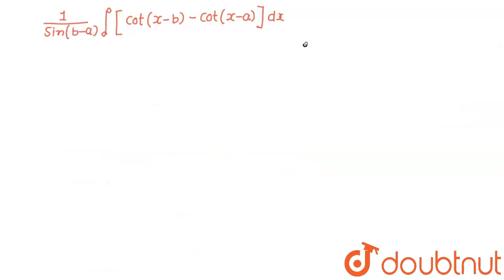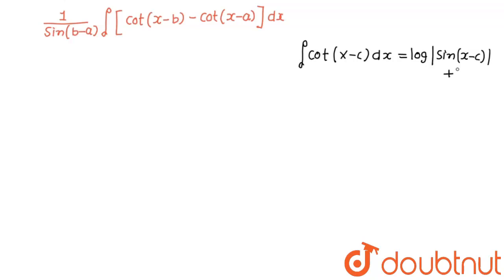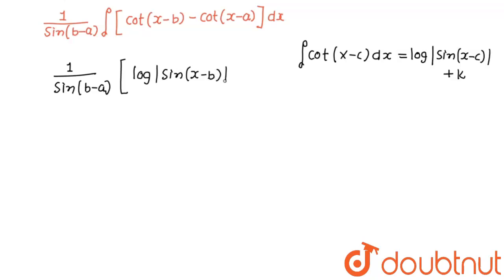Now I am going to integrate this. We all know that the integration of cot(x minus c) dx equals log|sin(x minus c)| plus k. So the final integration is 1 upon sin(b minus a), and integration of cot(x minus b) gives log|sin(x minus b)|, minus log|sin(x minus a)|, plus C.